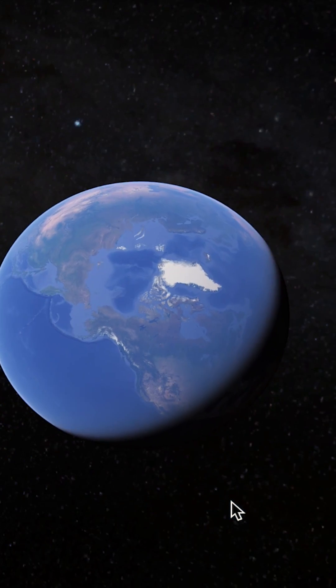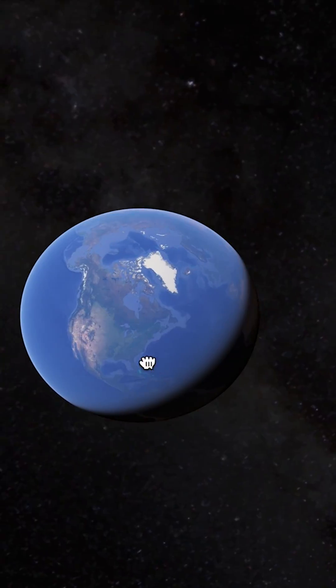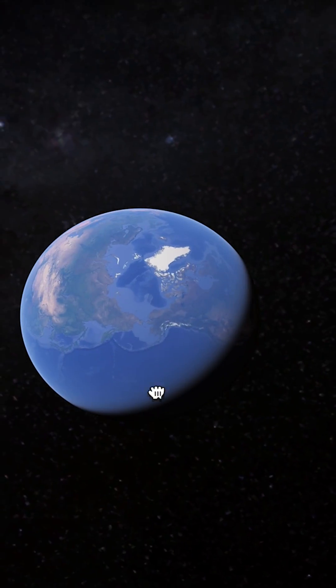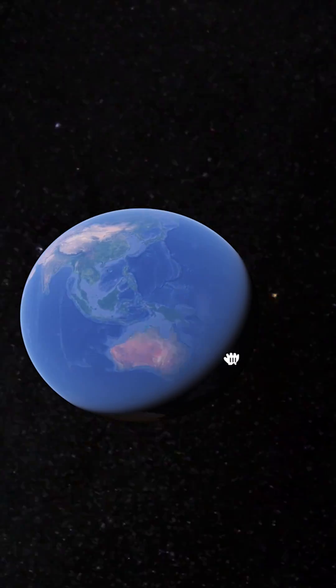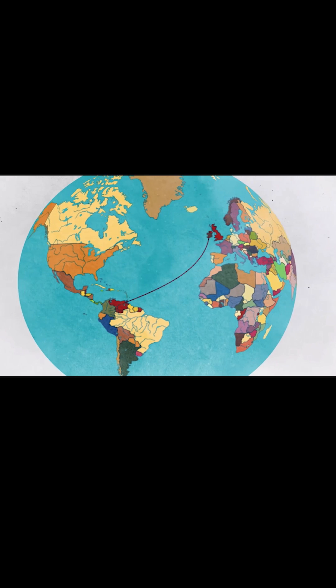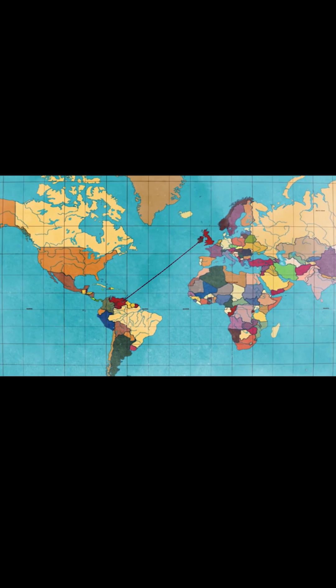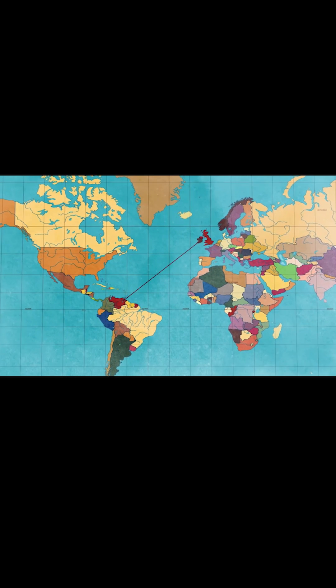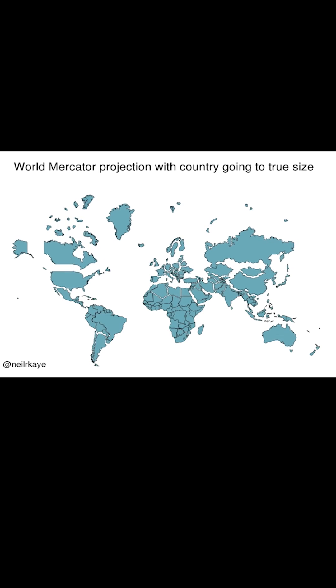There's a basic problem in showing the world on a flat map. The world's not flat, so that's the problem. When you take something that's a round globe and try to flatten it out, things get very distorted.